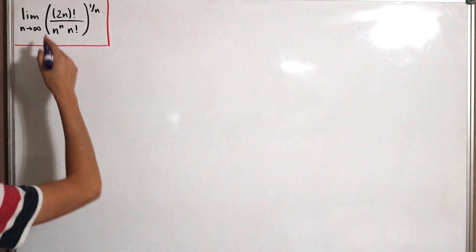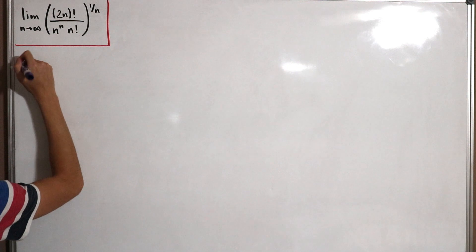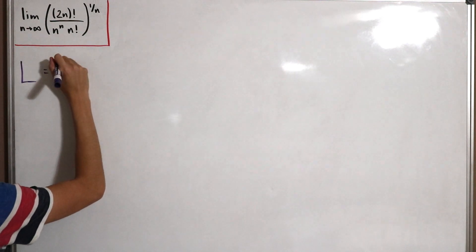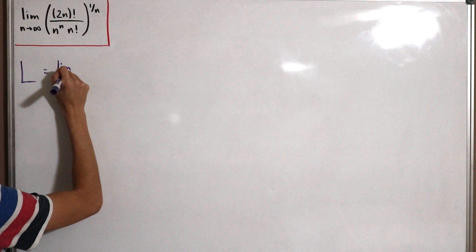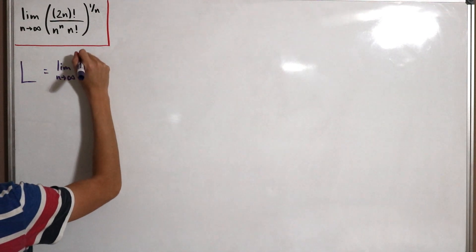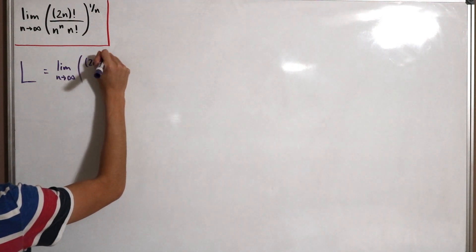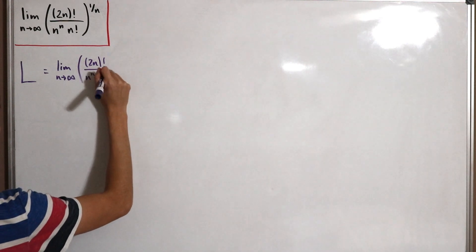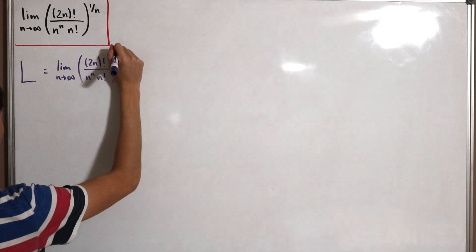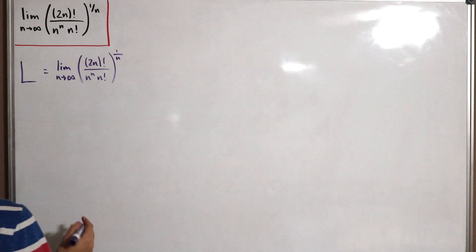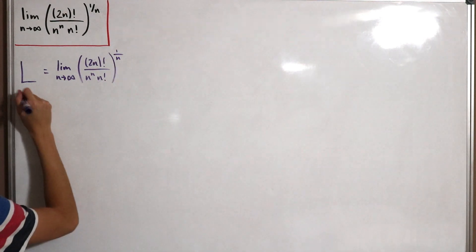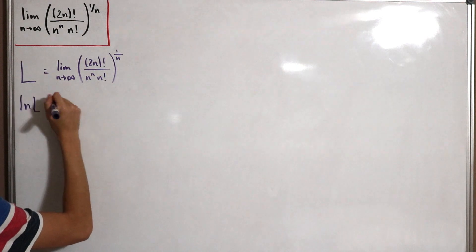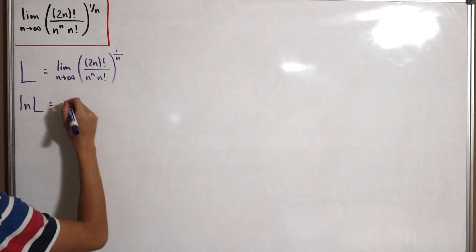Let's define our given expression as capital L, where L equals the limit as n approaches infinity of 2n factorial divided by n to the power n times n factorial, all to the power 1 divided by n. Now let's take the natural log of both sides, so we have ln(L) equals the limit of the natural log of that expression.